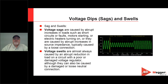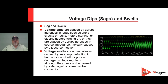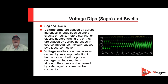Voltage SAGs are typically caused by large loads turning on. When a large load such as a motor turns on, you'll get a large inrush of current that produces a momentary SAG in the voltage. These happen on a daily basis. SAGs can also be caused by poor connections as well as source faults — if you have a single line-to-ground fault, we can see a SAG until the protective devices kick in.